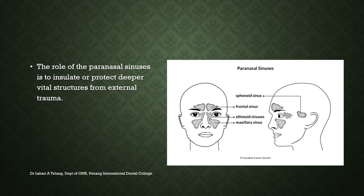It is important to understand that the paranasal sinuses are a group of air-filled or fluid-filled cavities located in the bone, in the skull. We have four pairs of sinuses located on either side of the skull: namely the maxillary sinus, which is the largest of them all, the frontal sinus, sphenoidal sinuses, and the ethmoidal sinuses.